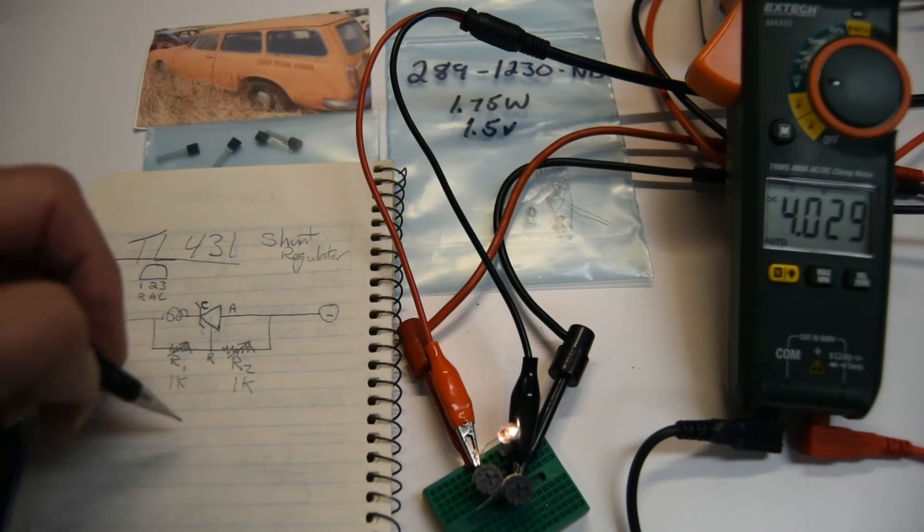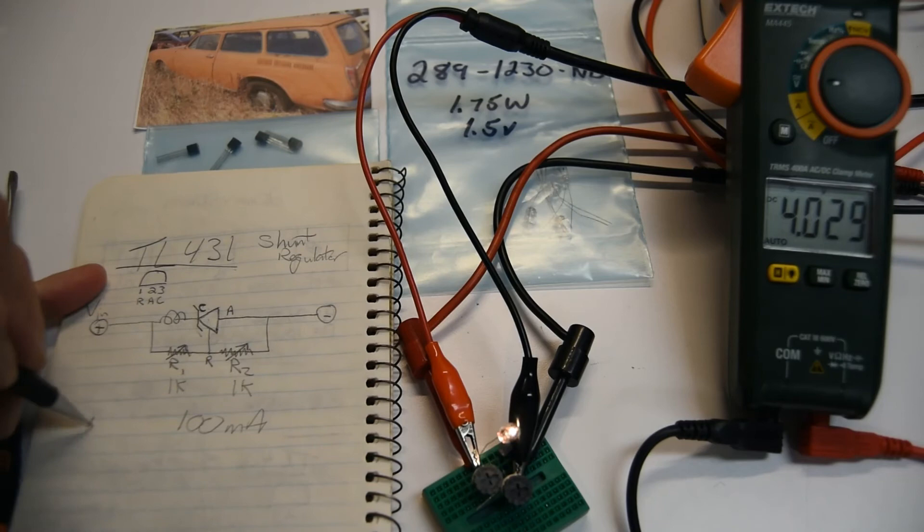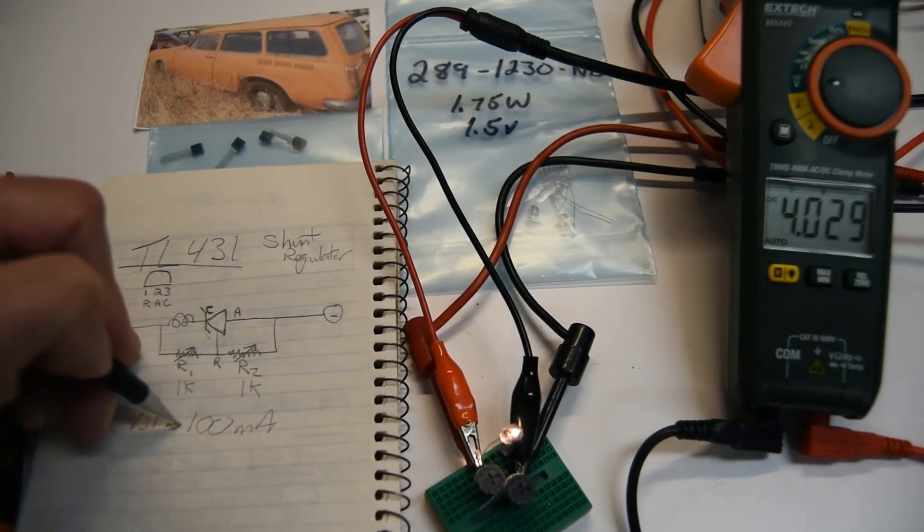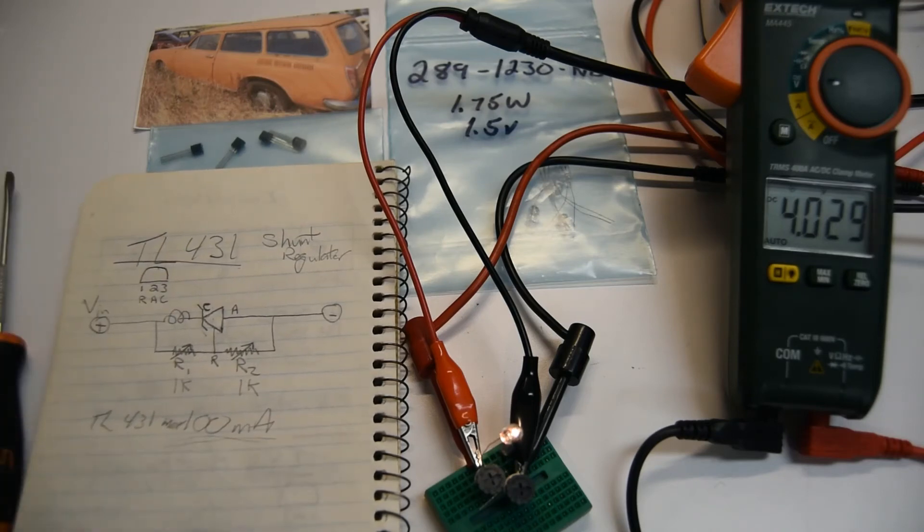TL431 max is 100 milliamps. All the research I did said the Leaf batteries typically balance or regulate at less than 50 milliamps. 100's on the high side. They'll balance all the time at like 10 to 20 milliamps.